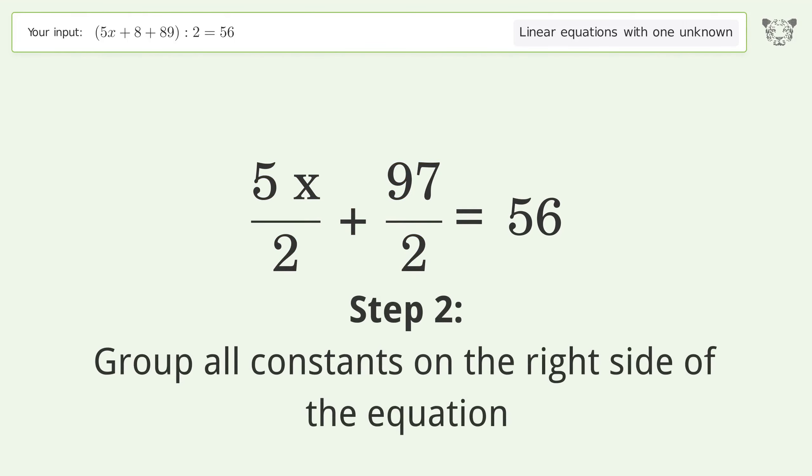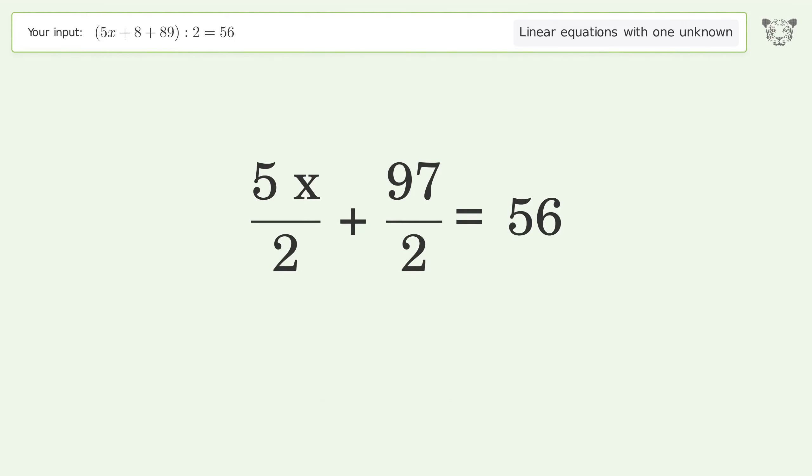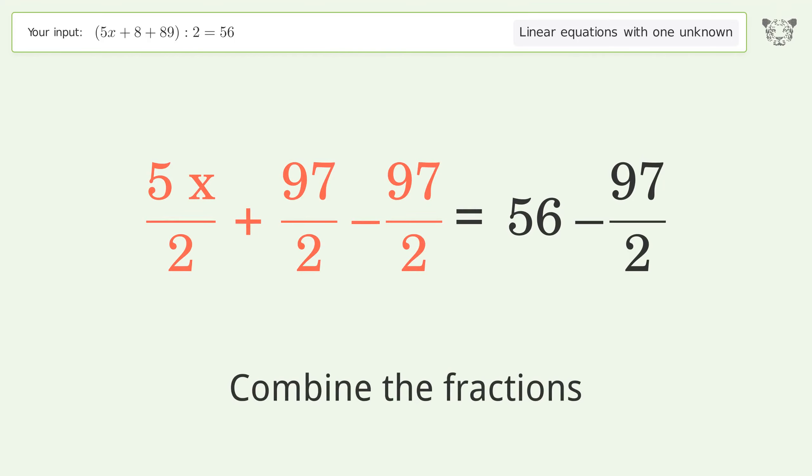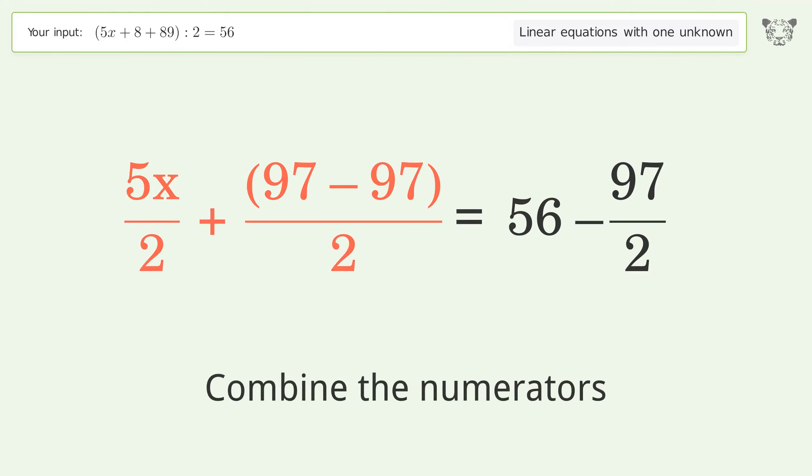Group all constants on the right side of the equation. Subtract 97 over 2 from both sides. Combine the fractions. Combine the numerators.